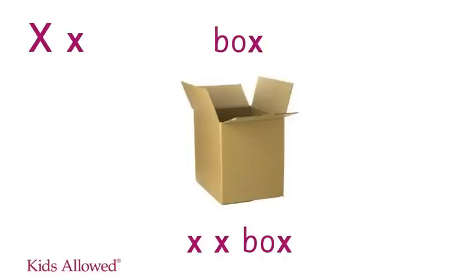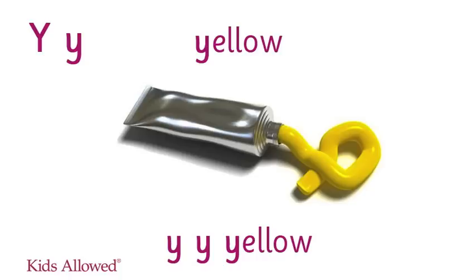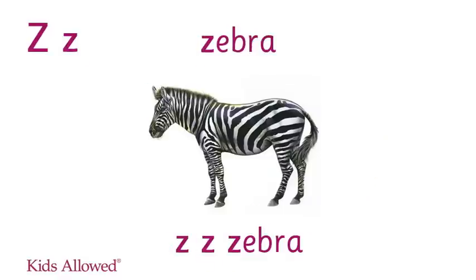X is for box. X, X, box. Y is for yellow. Y, Y, yellow. Z is for zebra. Z, Z, zebra.